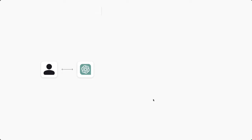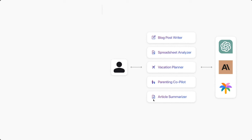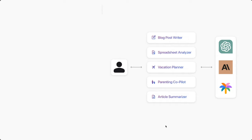So these are some of the categories: conversational agents, generators, and analyzers. In conversational agents, people are making co-pilots for various job types. You've probably seen co-pilots for software developers that help them write code better, faster, smarter. But it's not just developers — countless other job functions in every industry can use co-pilots. I'll show you a parenting co-pilot as one example.